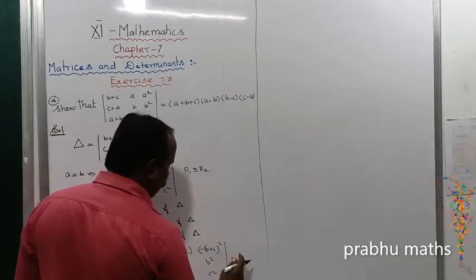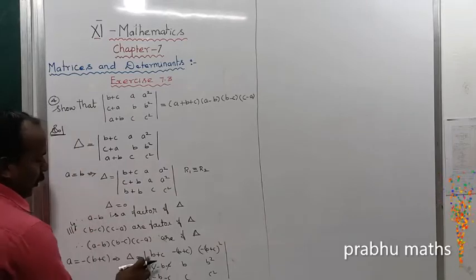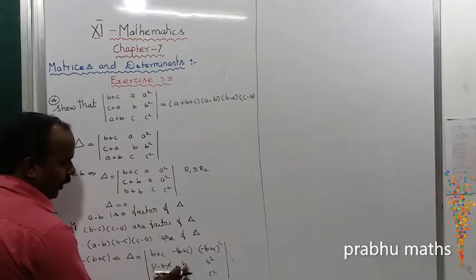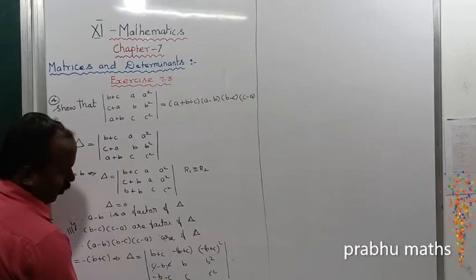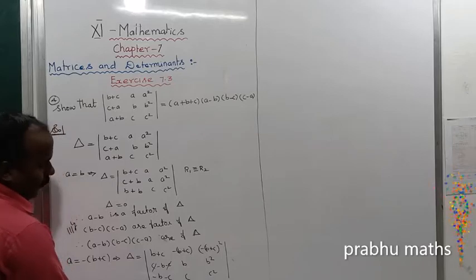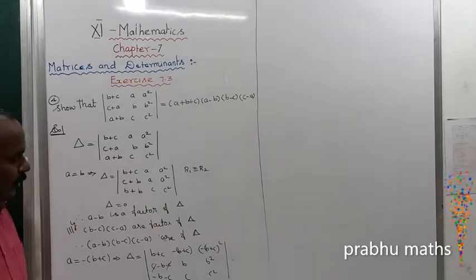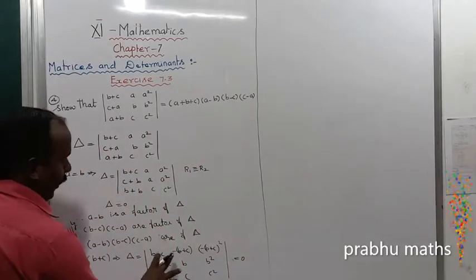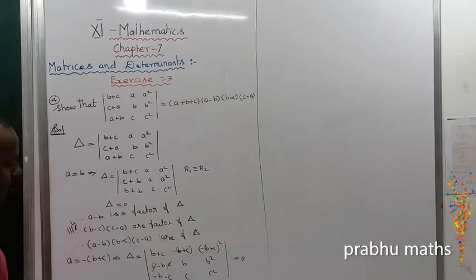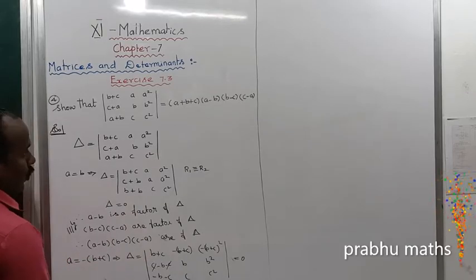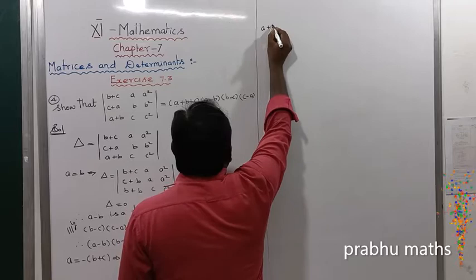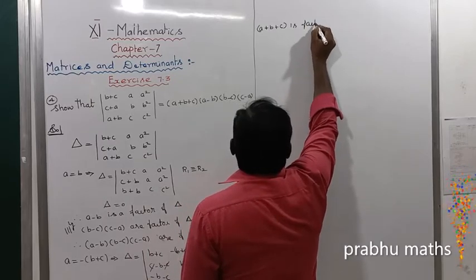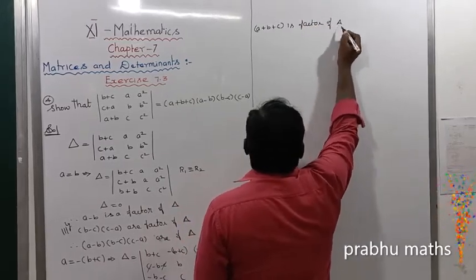So the determinant equals 0. Since when a+b+c=0 the determinant is 0, (a+b+c) is a factor of delta.